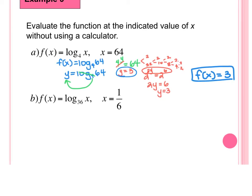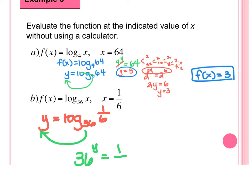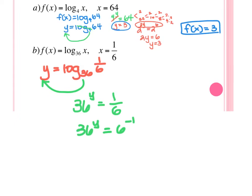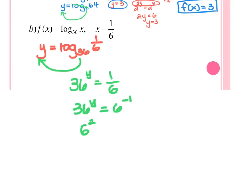Part B: F of X equals log base 36 of X, and X is 1/6. So I immediately substitute: Y equals log base 36 of 1/6. Putting it in exponential form: 36 to the Y equals 1 over 6. To get from a whole number to a fraction, I have to use a negative exponent. So I can say 36 to the Y equals 6 to the negative 1, and then rewrite 36 as 6 squared. So 6 squared raised to the Y equals 6 to the 2Y, equals 6 to the negative 1. So 2Y equals negative 1, or Y equals negative one-half.